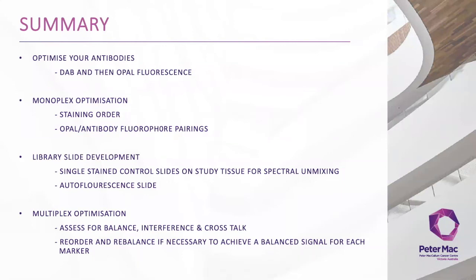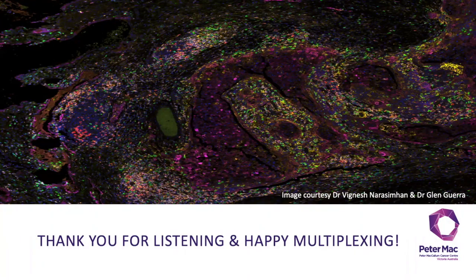To summarize briefly what we talked about today: the first step when developing an Opal multiplex assay is to titrate your antibodies using DAB and then Opal fluorescence. Next you need to perform your monoplex optimizations, mimicking the position in your multiplex IHC where possible. We discussed the importance of staining order and Opal antibody-fluorophore pairings to avoid issues such as bleed-through and TSA blocking. The third step is to prepare your single stain control library slides, which are used to spectrally unmix and isolate the spectra for each of the Opal fluorophores so that you can quantitatively evaluate the locations and co-localizations of your various biomarkers. I also discussed the importance of the autofluorescence slides being run on your study tissue samples to increase your signal to background ratio. Finally, multiplex optimizations assess for signal balance, interference and crosstalk, reordering and rebalancing if necessary to achieve a balanced signal for each of your markers. Thank you for listening and happy multiplexing.